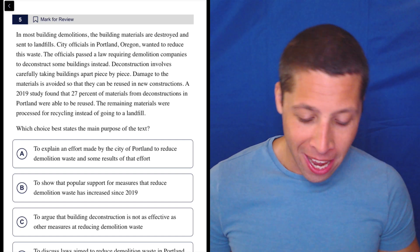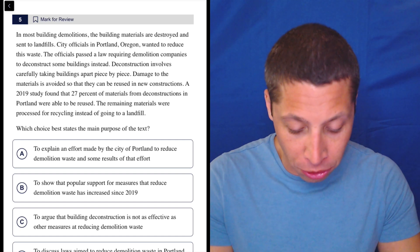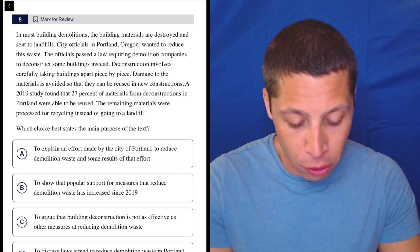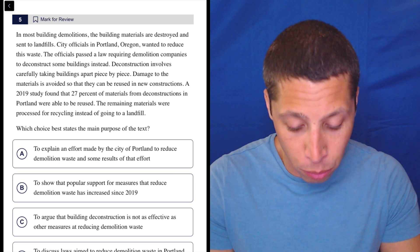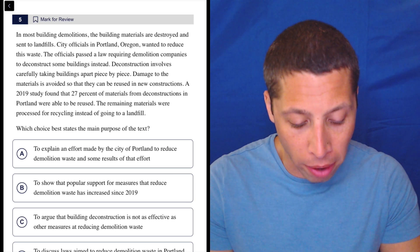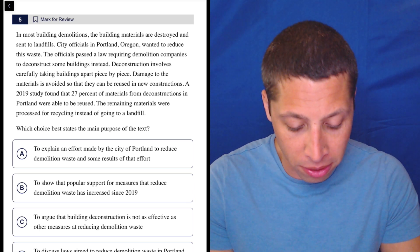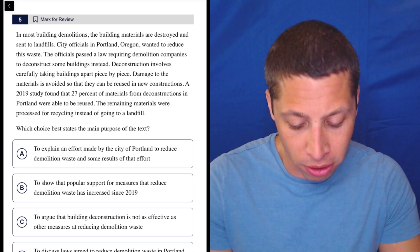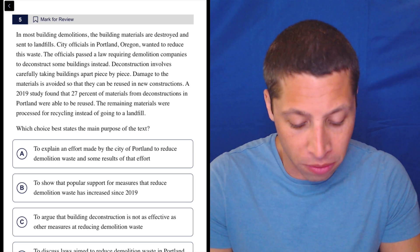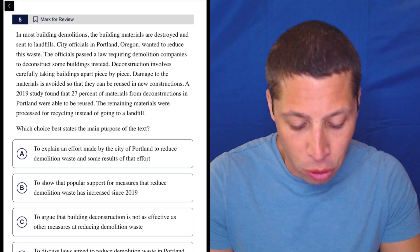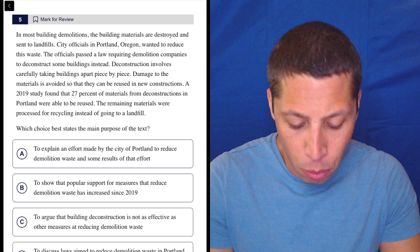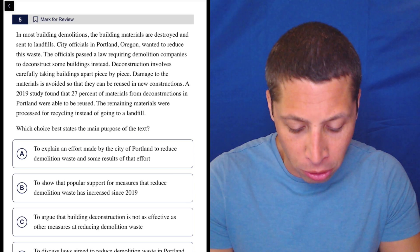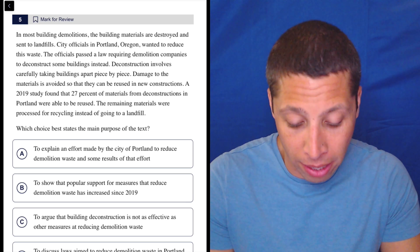All right, let's just dive right in here. In most building demolitions, the building materials are destroyed and sent to landfills. City officials in Portland, Oregon wanted to reduce this waste. The officials passed a law requiring demolition companies to deconstruct some buildings instead. Deconstruction involves carefully taking buildings apart piece by piece. Damage to the materials is avoided so they can be reused in new constructions. A 2019 study found that 27% of materials from deconstructions in Portland were able to be reused. The remaining materials were processed for recycling instead of going to a landfill.